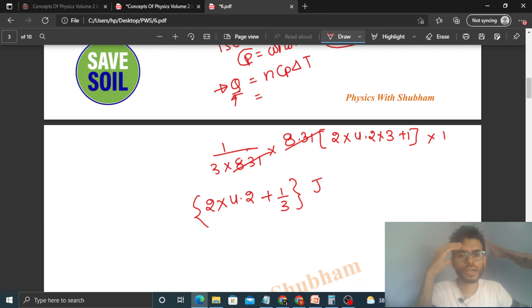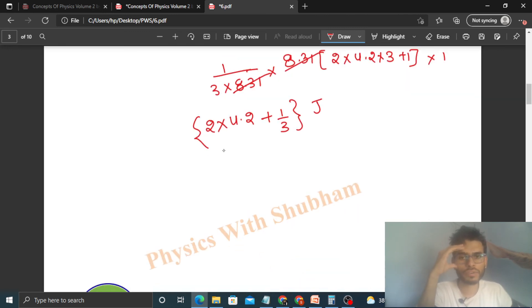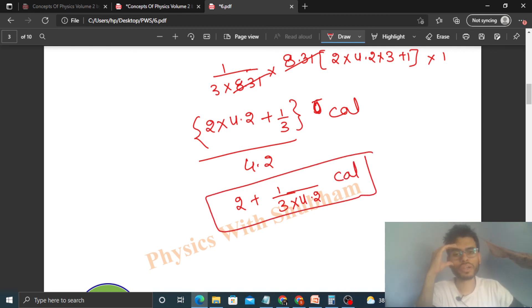Because we solved in SI units. If you want it in calorie then further divide it by 4.2. So this will be in calorie. So it will be 2 plus 1 upon 3 into 4.2. So this will be in calorie. So the numerical answer you can find out yourself.